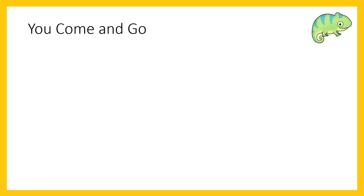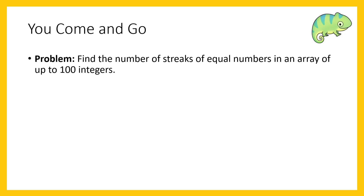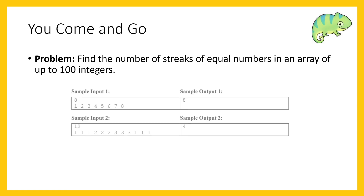For 'You Come and Go,' you are given an array of integers and expected to find the number of streaks of equal numbers in that array. In the first sample, you'll have a bunch of streaks of length 1 — the ones and the 3, 4, 5, 6, 7, 8 are all individual streaks — so the answer is 8.